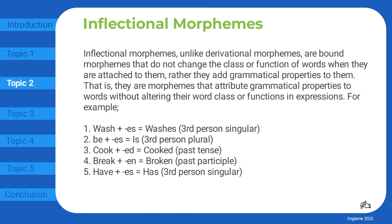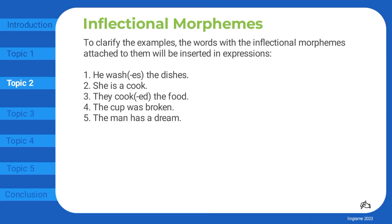For example: 'wash' plus '-es' gives 'washes' (third person singular). 'Bee' plus '-s' gives 'bees' (third person plural). 'Cook' plus '-ed' gives 'cooked' (past tense). 'Break' plus '-en' gives 'broken' (past participle). 'Have' plus '-s' gives 'has' (third person singular). To clarify with expressions: 'He washes the dishes.' 'She is a cook.' 'They cooked the food.' 'The cup was broken.' 'The man has a dream.'